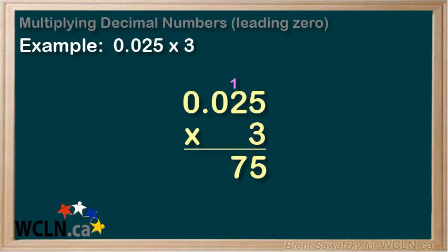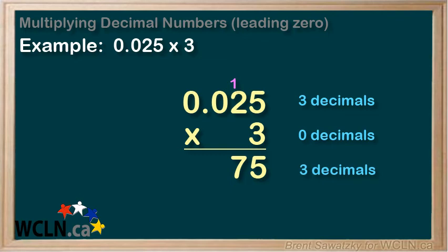Now, to finish this question up, we need to determine where to put the decimal. So let's count the total number of decimals involved in the numbers that we're multiplying. There are 3 decimals in the first number and there are no decimals in the second number. So we have 3 plus 0 equals 3. So we need 3 decimals in our answer.